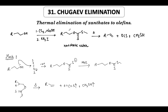Hello everyone, welcome to Racine Academy. This is our 31st video on the name reaction series, and in this video we are going to talk about the Chugaev Elimination Reaction. It is also very popularly called the Xanthate Elimination, and also sometimes called the Syn Pyrolytic Elimination.